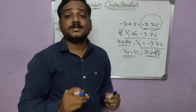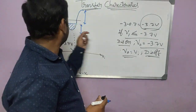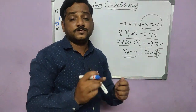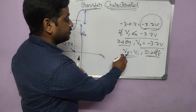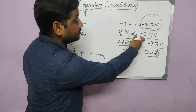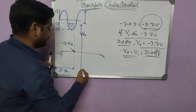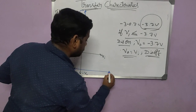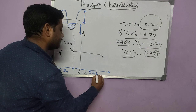When the diode is ON, we call it the clipping region because it is clipping the output to a constant value. When the diode is OFF — if V_in is greater than minus 3.7 volts — this is the transmit region, where input is transmitted to the output.